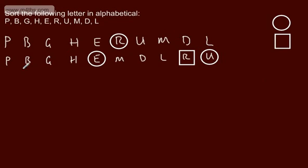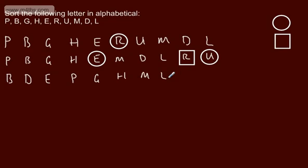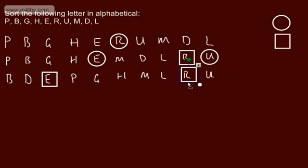Let's now consider the left sublist. We need to put this in alphabetical order. So we're going to have B, then D comes before E, so it's going to be B, D, then E. Then we consider the others on the other side of it in order: B, D, E, then P, G, H, M, L. R is already locked down, and then we lock down U. So E is now locked in place, R was already locked in place, and U is now locked in place.